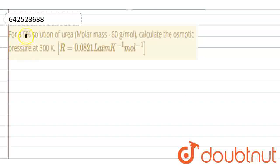Hello everyone! Here the question is: for a 5% solution of urea, calculate the osmotic pressure at 300 Kelvin temperature.